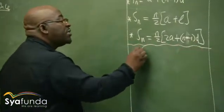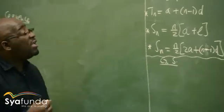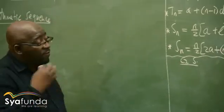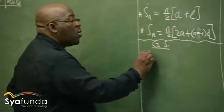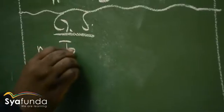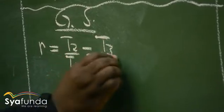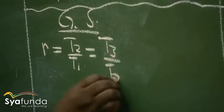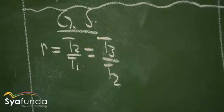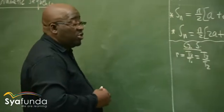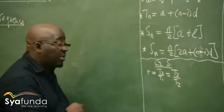If you go to the geometric sequence, it also has its way of identifying it. We identify it by the common ratio r, which is T2 over T1, which is the same as T3 over T2, which is the same as T10 over T9, and so on and so forth. It should be common, it should be the same. It also has its general term, like the arithmetic sequence.